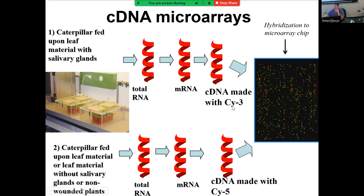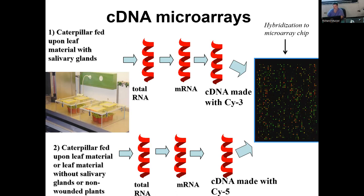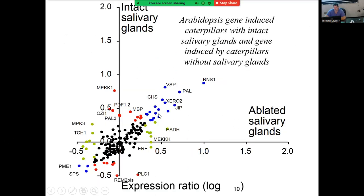To make things more confusing: when you label with Cy3, it looks red but scans green. The cDNA labeled with Cy5 looks green but scans red — the opposite of what you'd expect. Then we take those two scanned images, color-overlay them, and use the computer to analyze what genes might be turned on. Black dots represent genes turned on irrespective of treatment; green represents genes turned on in one condition like caterpillars with salivary glands; red represents the opposite.